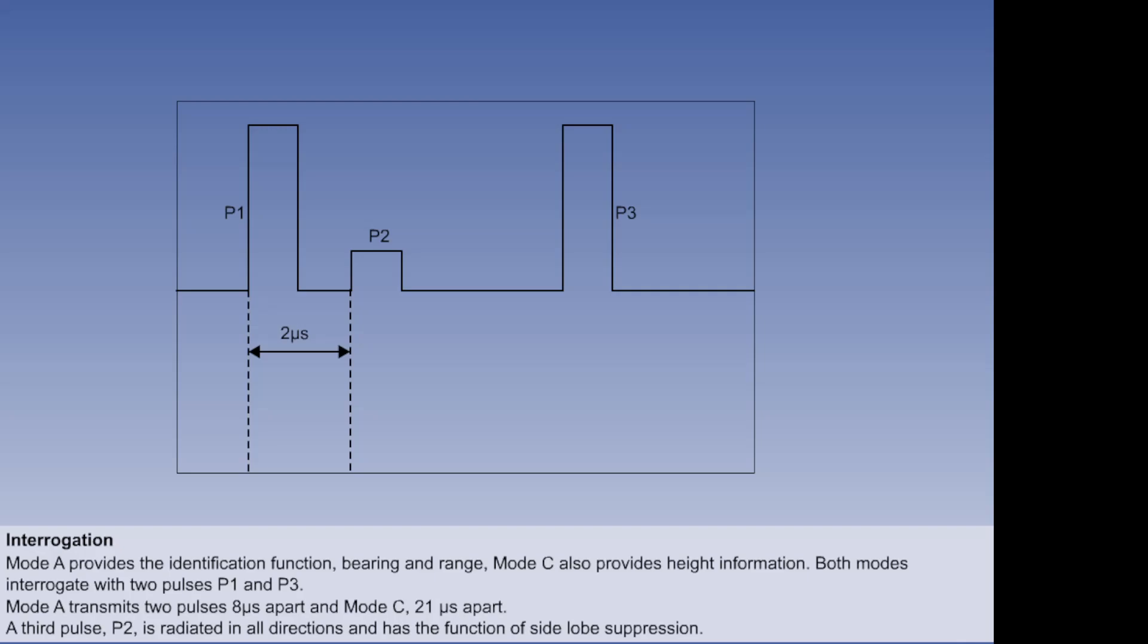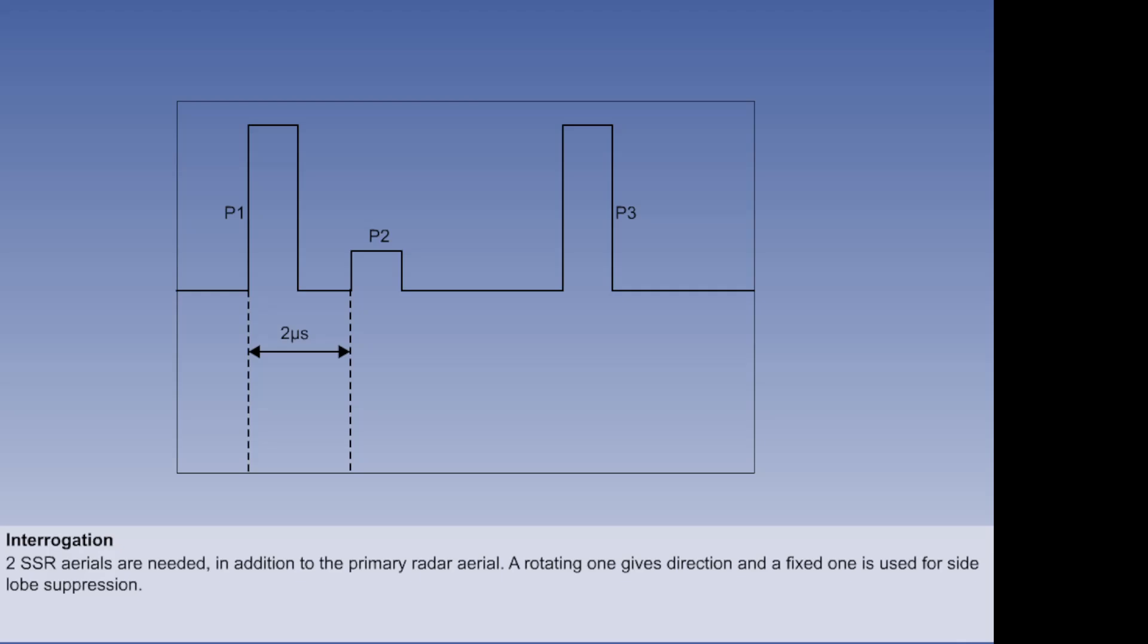The design of SSR antennae, usually referred to as slotted arrays, tends to promote the production of side lobes, wasted energy that spills out of the sides of the aerial. To prevent aircraft from replying to interrogations in the side lobes, which would be displayed on an incorrect bearing, an additional pulse, P2, is transmitted 2 microseconds after P1. Unlike P1 and P3, which are only transmitted in the direction that the antenna is pointing, P2 is radiated in all directions. It is arranged that the signal strength of P2 just exceeds the maximum possible strength of any of the side lobes. This means that two SSR aerials are needed, in addition to the primary radar aerial. A rotating one gives direction, and a fixed one is used for side lobe suppression.